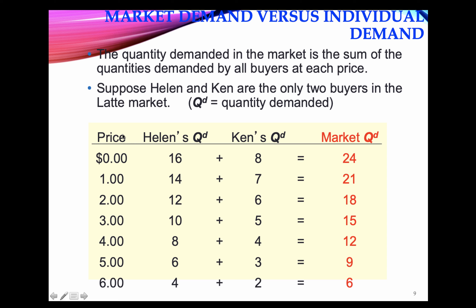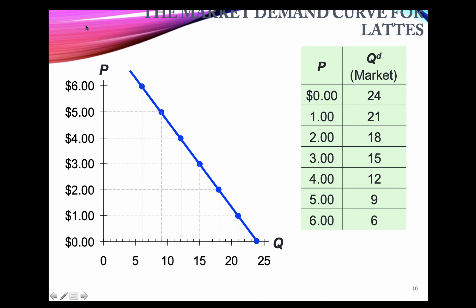Recall that price is on the y-axis and quantity is on the x-axis. We have this market demand schedule which we draw on the graph, measuring price on the y-axis and quantity on the x-axis. Once you plot this, we see that the market demand is also downward sloping.